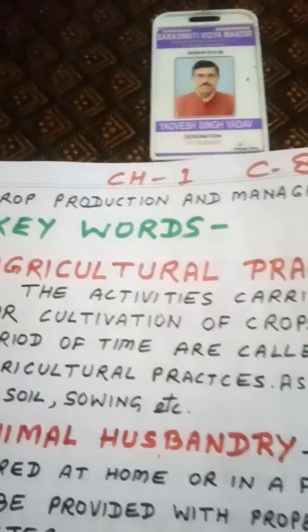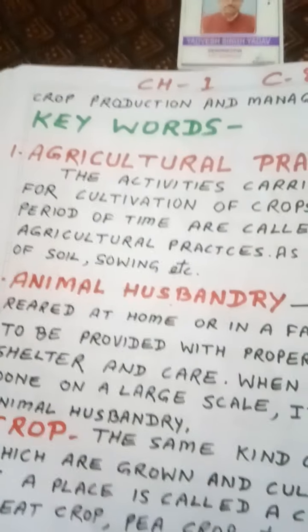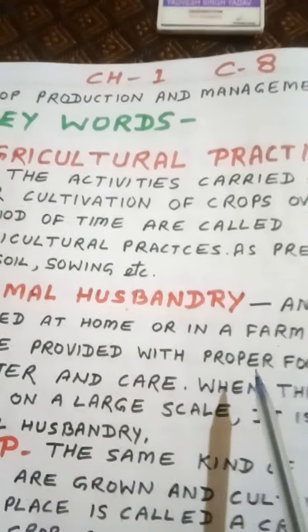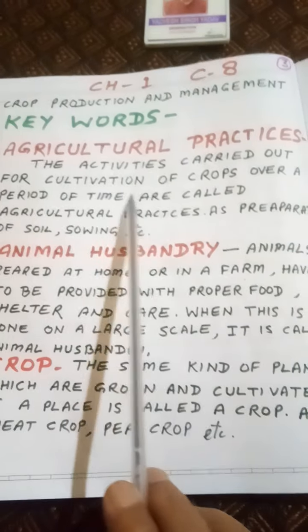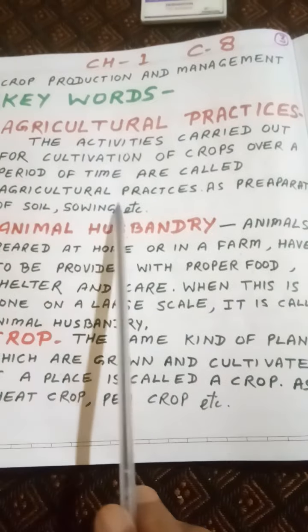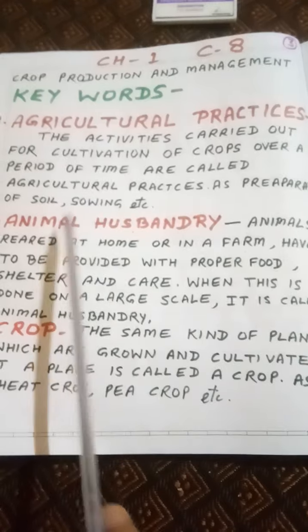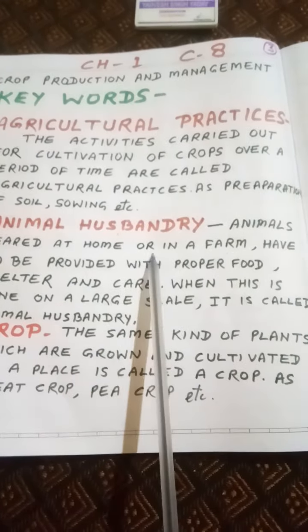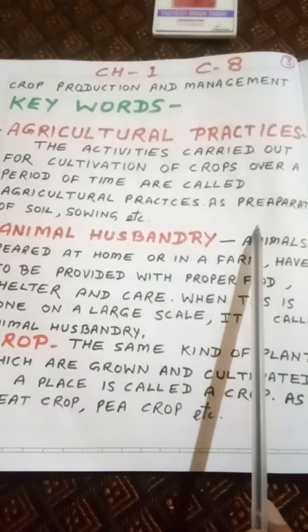Keyword 1: Agricultural Practices. You know very well about agricultural practices. Definition: The activities carried out for cultivation of crops over a period of time are called agricultural practices, such as preparation of soil, sowing, etc. In the previous video, we studied about preparation of soil and sowing.